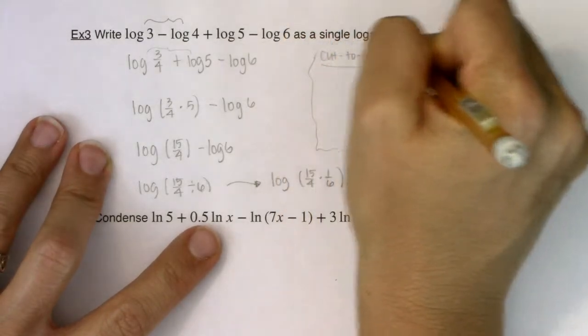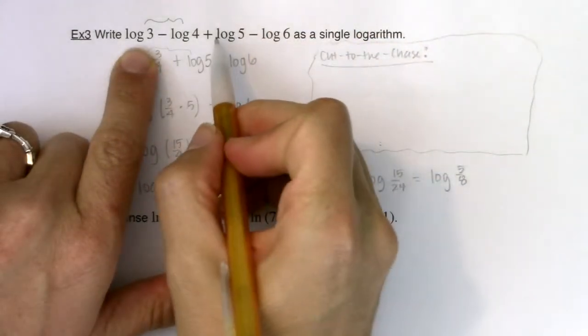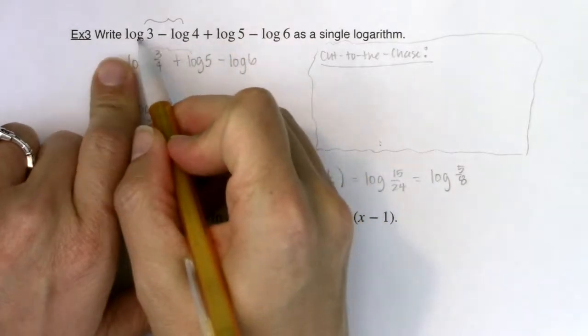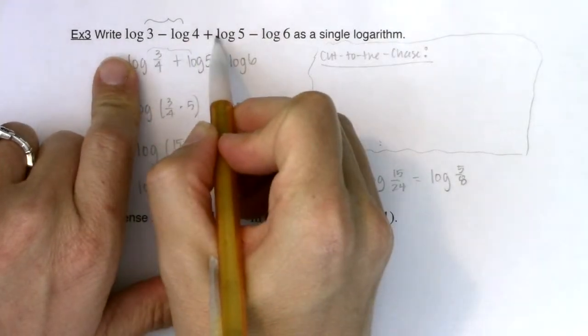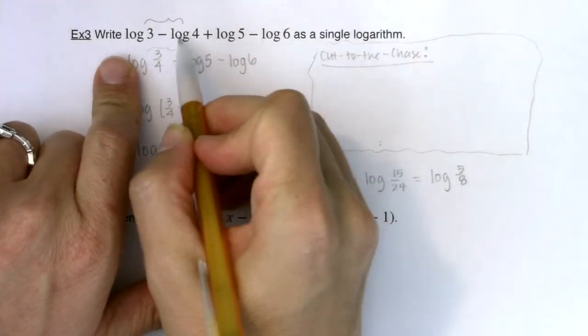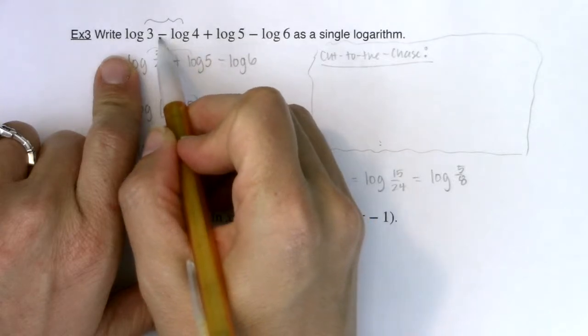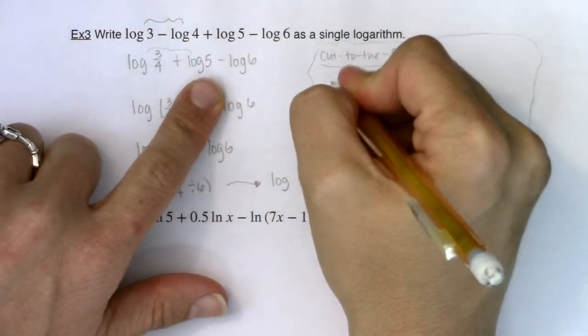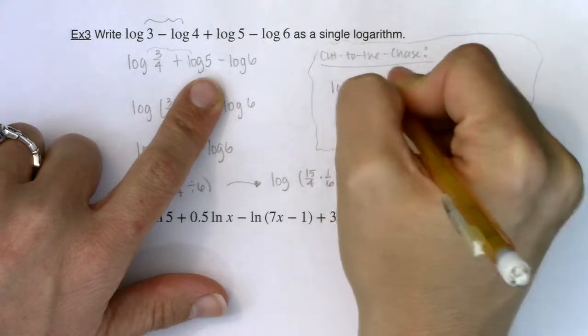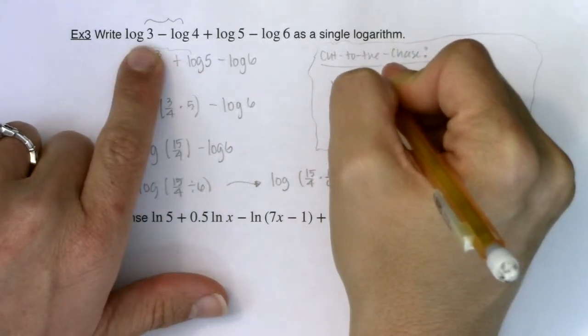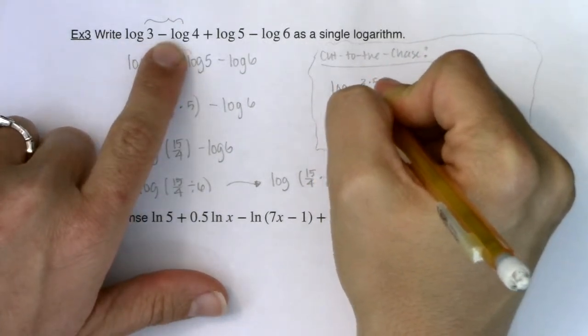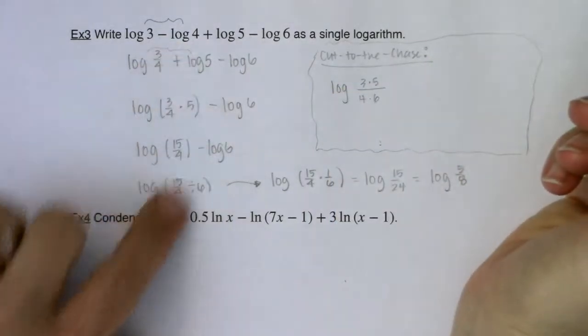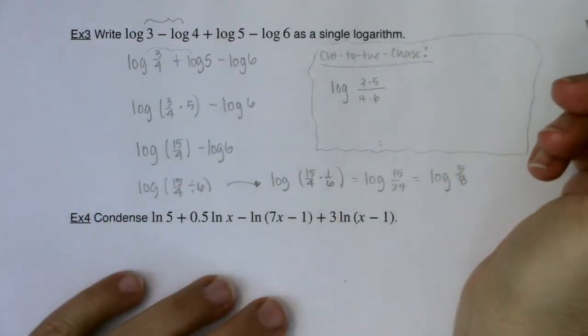Basically, how these logs work is anything that has a positive coefficient in front of it, like log 3 and log 5, those will be in the numerator. And anything with a negative coefficient like minus log 4 and minus log 6, those will be in the denominator. So I know I will ultimately have log of 3 times 5 in the numerator and 4 times 6 in the denominator.